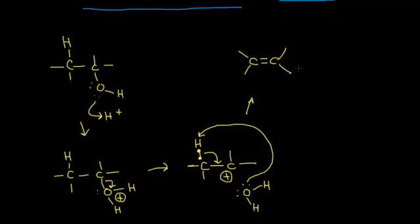Let's go back and follow the electrons more carefully. The first pair in blue are the ones that ended up forming the new C-C double bond. The electrons in the carbon-oxygen bond kicked off onto the oxygen. The last set moved in to form the alkene. Notice that we had a positively charged carbon—a carbocation—in this mechanism. In a future video, we'll talk more about carbocations and possible rearrangements; for now, we focus on the general mechanism.